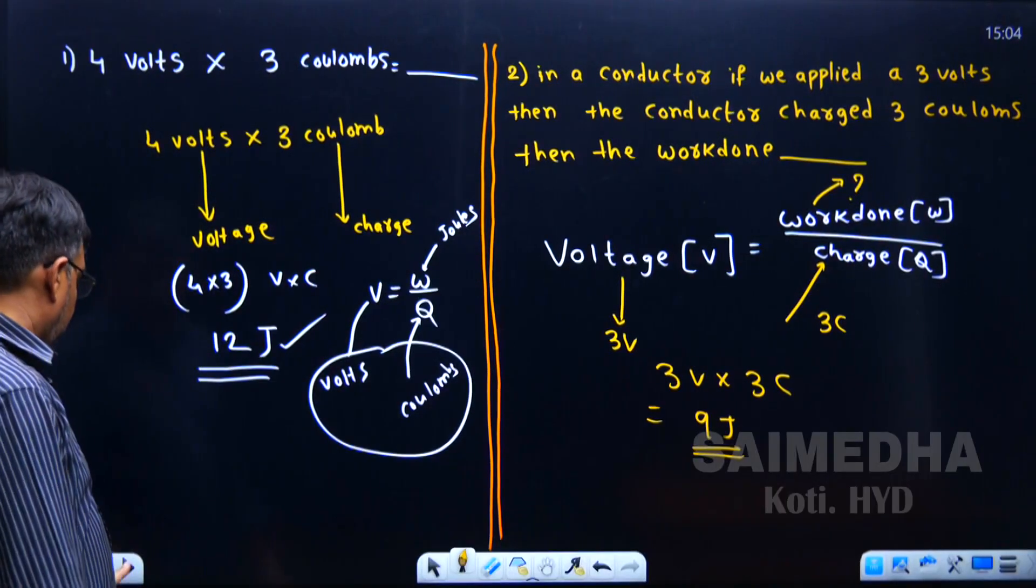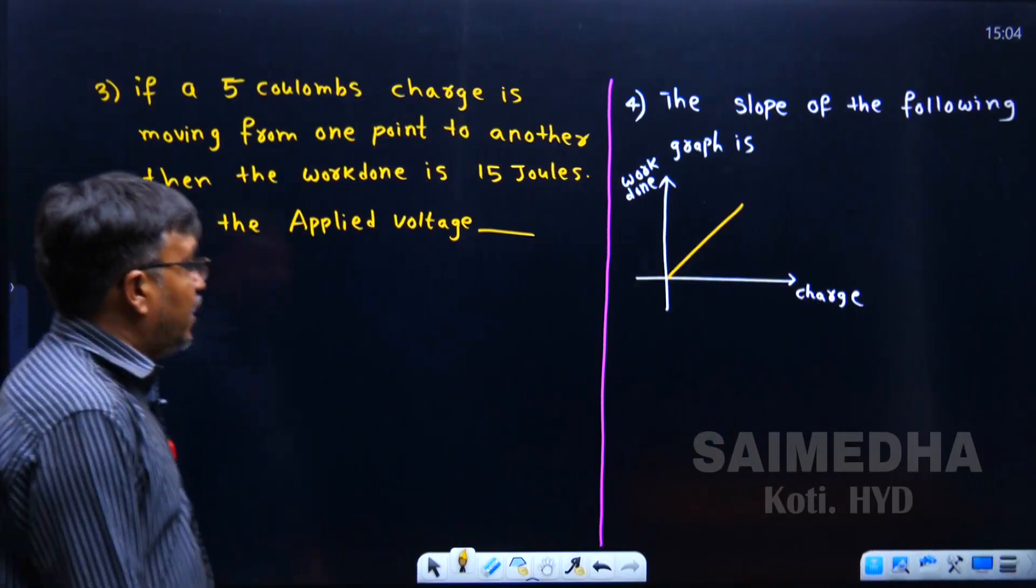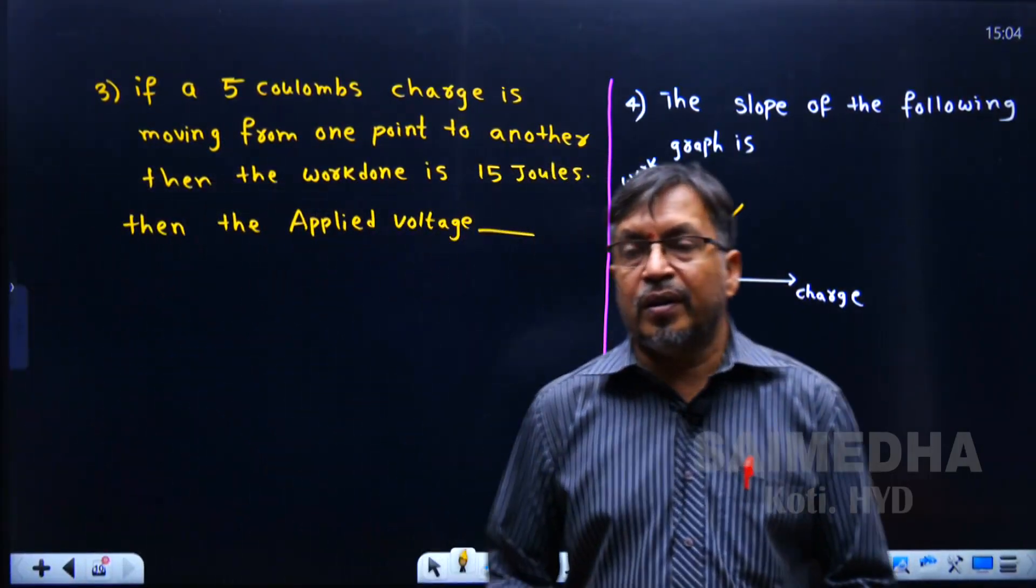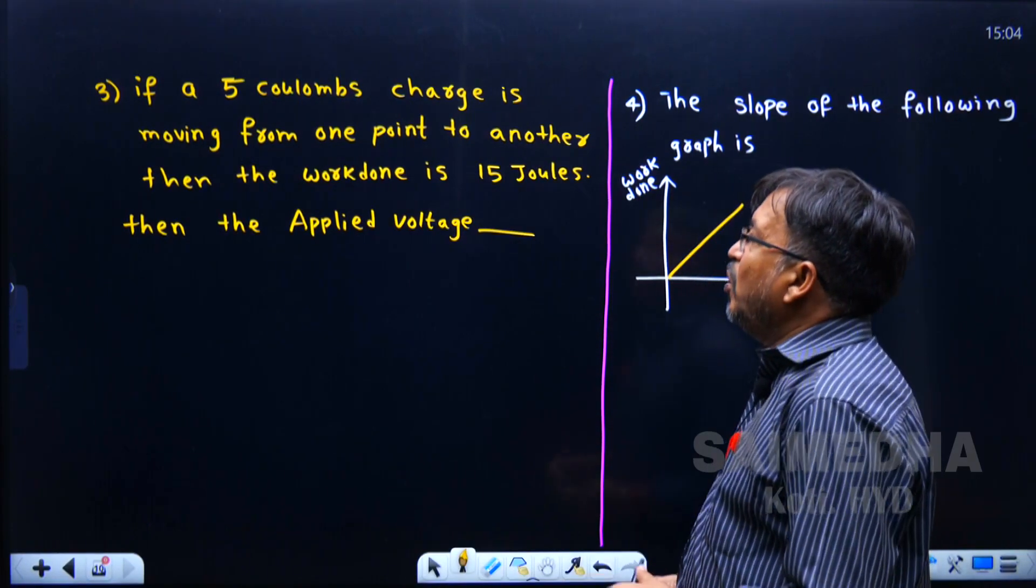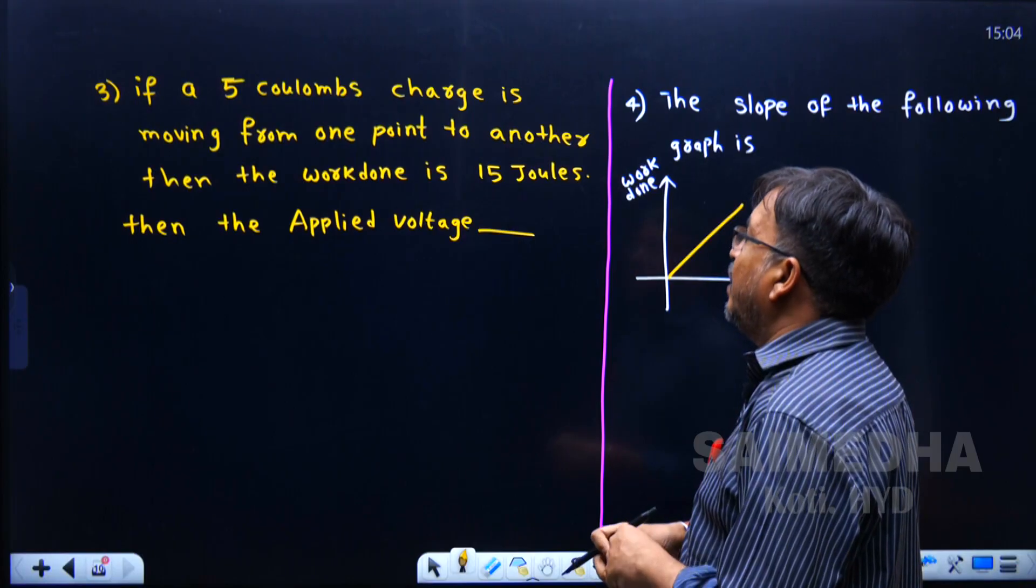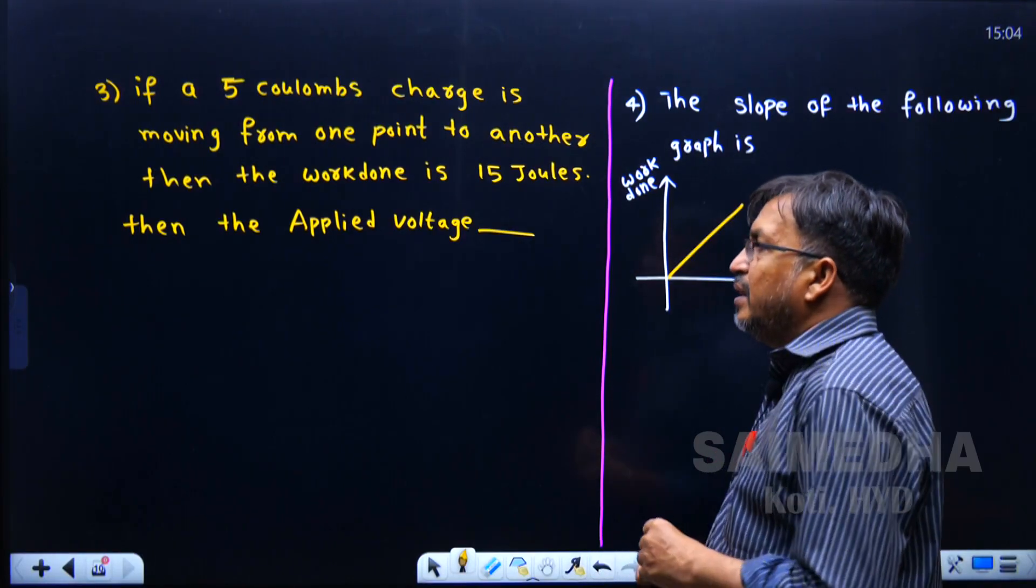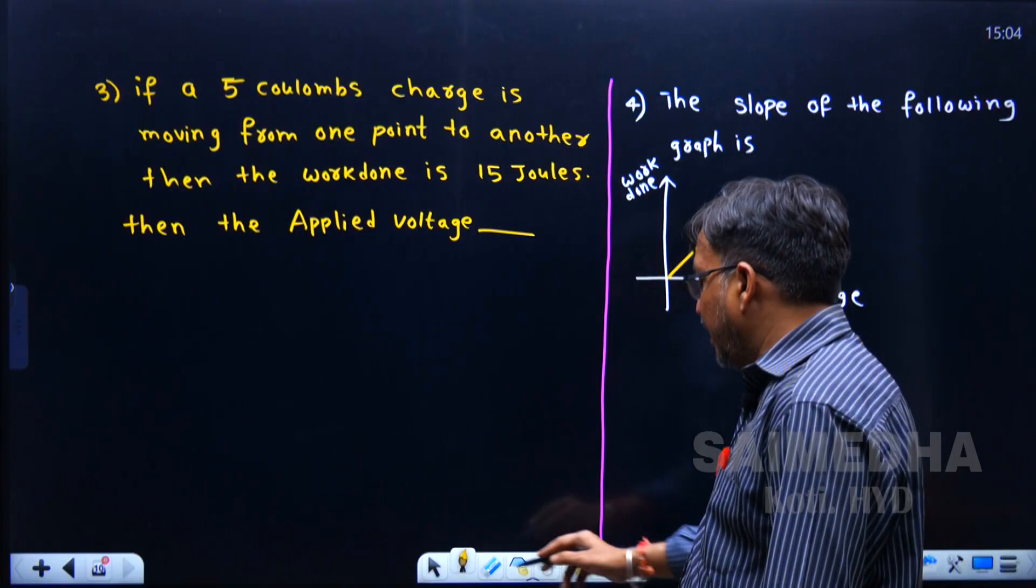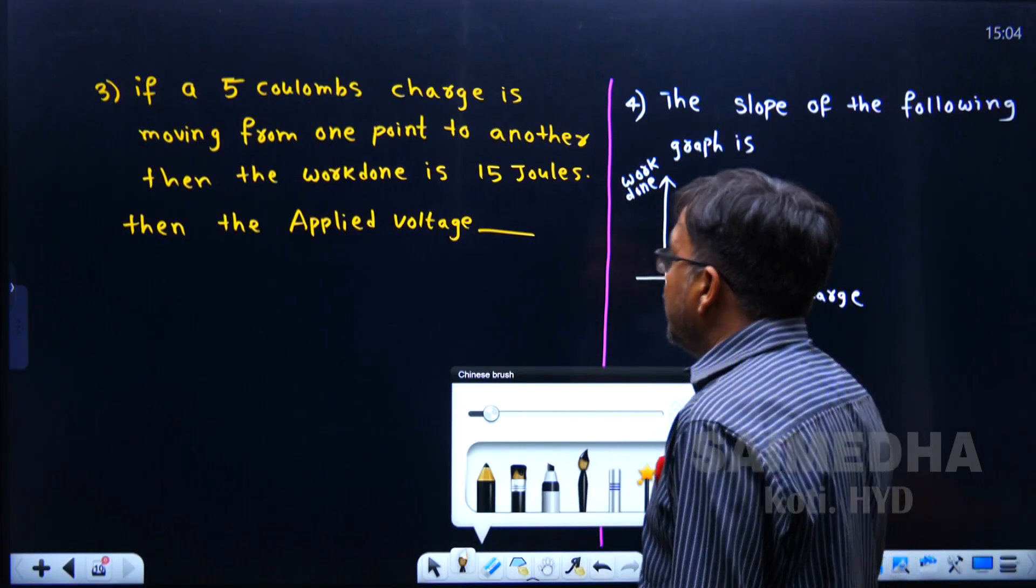Next question, number 3. If a 5 coulombs charge is moving from one point to another point, then the work done is 15 joules. Then the applied voltage is? This is also a very simple question.